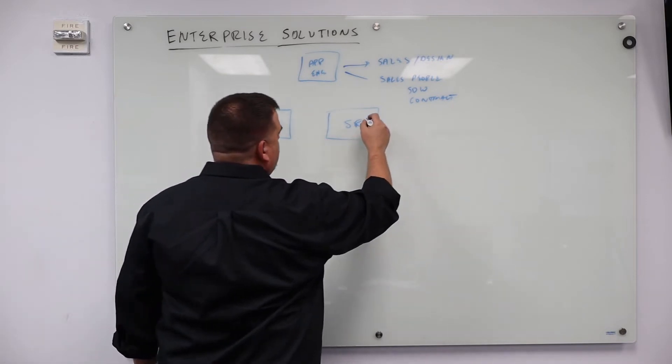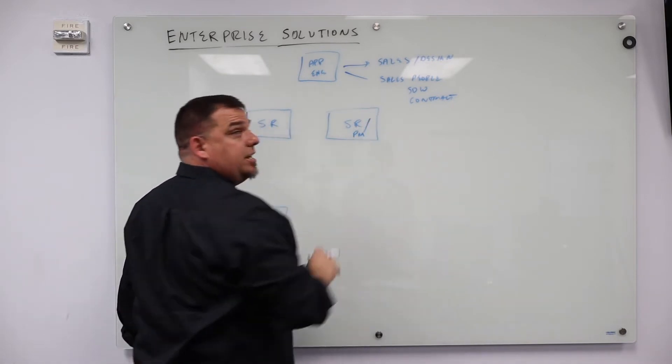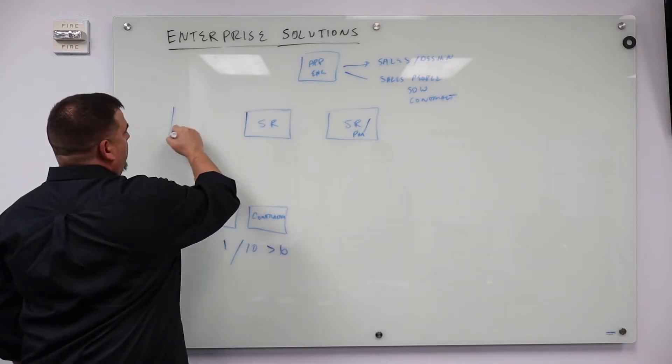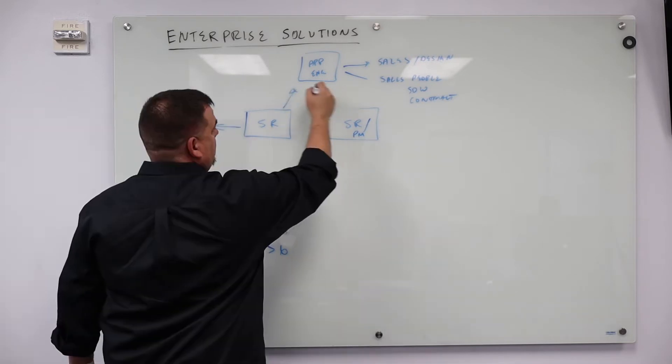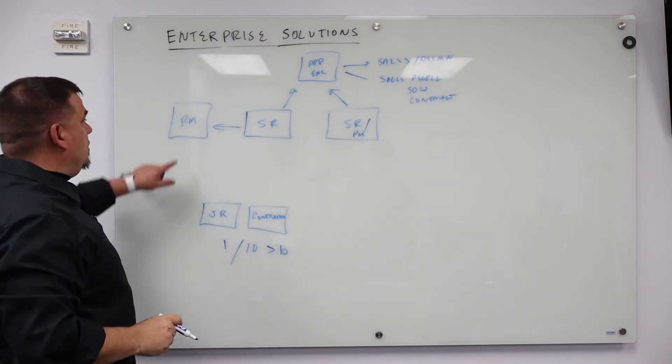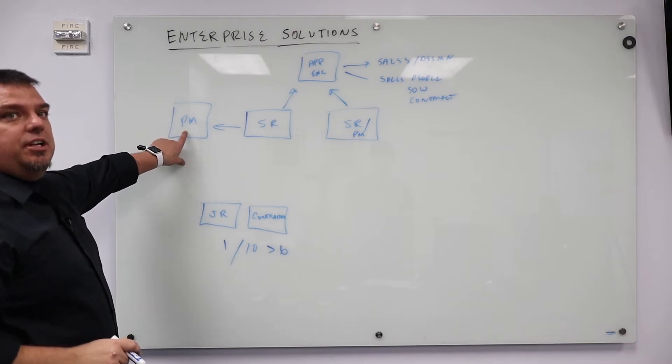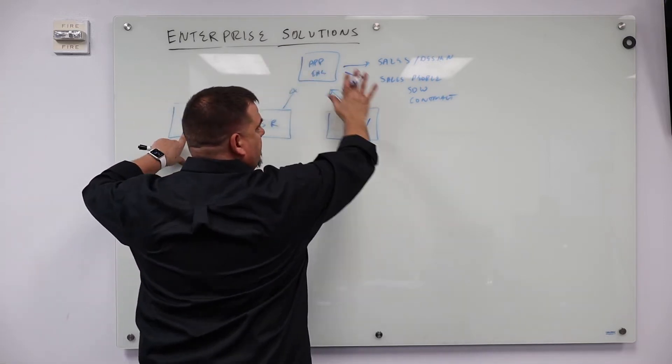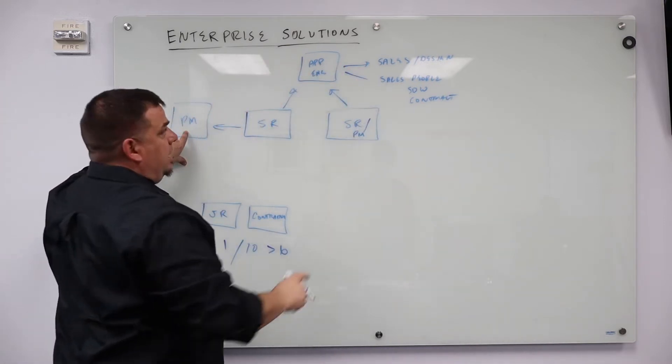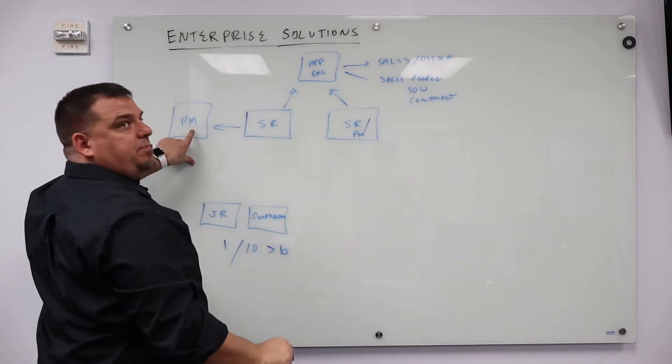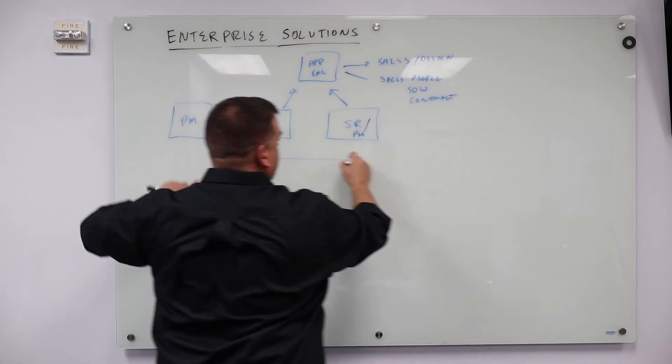This senior engineer sometimes is your project manager as well, or you have a PM who used to be a senior engineer. So they kind of go like this. So you have a project manager who used to be a senior engineer. So these guys are the one that sells the customer the bill of goods. Well, and that sales guy. And the project manager gets the project file. And here's what happens.